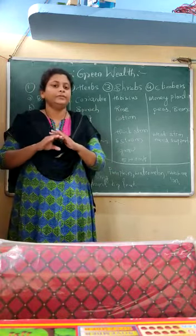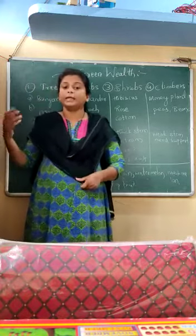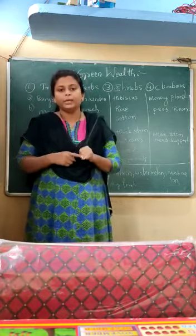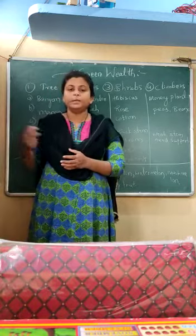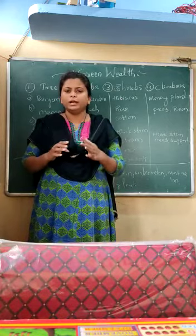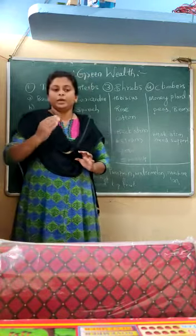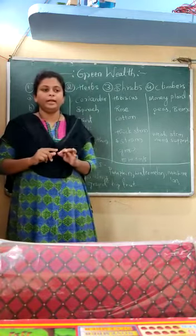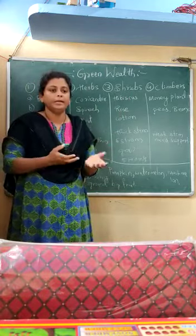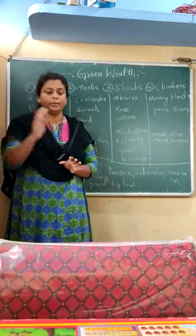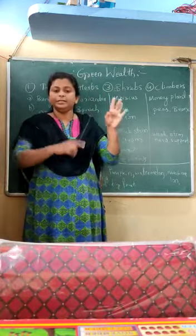For example, just around my house I can see a neem tree, mango tree, tulsi, aloe vera, mint, coriander, some vegetables, flower plants like rose and hibiscus. These are all totally different. Of course the color is green, but they differ in their leaf venation, the structure of the leaf, the size of the tree, and how they have grown — even the type of flowers they bear.